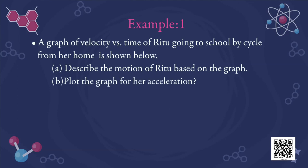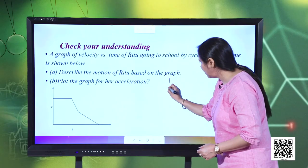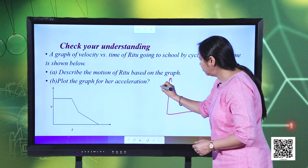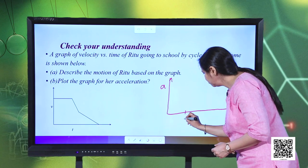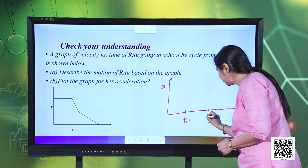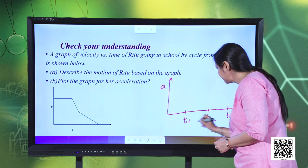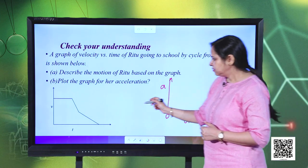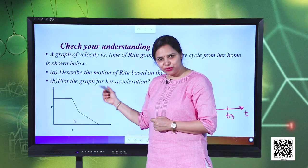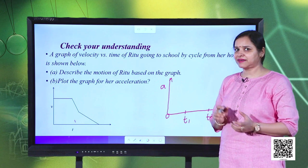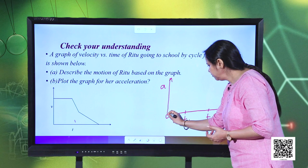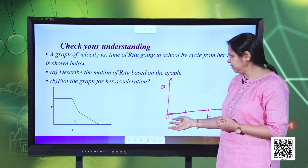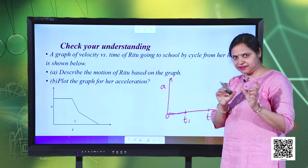Now let us plot the acceleration-time graph. We take time along the x-axis and acceleration along the y-axis, labelling t₁, t₂ and t₃. For the interval 0 to t₁, since velocity is uniform, acceleration is zero — the graph overlaps the time axis during this duration.